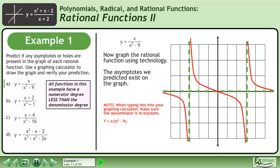Now graph the rational function using technology. The asymptotes we predicted exist on the graph. When typing this into your graphing calculator, make sure the denominator is in brackets.